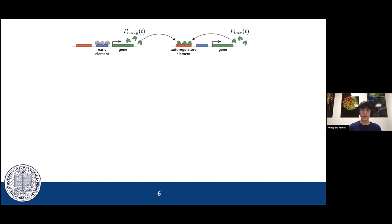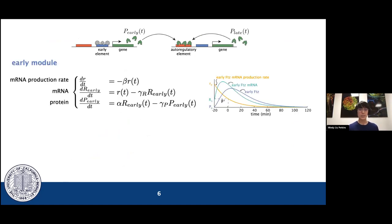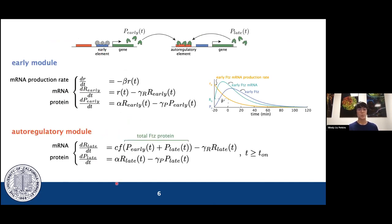Based on our experimental observations, we developed a dynamical systems model to predict the mean FUTs mRNA and protein concentrations over time. We broke our model into two modules. The first is the early module, which describes how the upstream factors drive FUTs expression by binding the early element. This describes the mRNA concentrations and the protein concentrations resulting from this regulation. Similarly, we define an autoregulatory module to explain how FUTs binding to its own enhancer drives the production of mRNA and thereafter the protein. Note here we have this parameter T_on, which is 20 minutes before gastrulation, showing that the autoregulatory module is not responsive until that time.